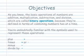As you know, the basic operations of numbers are addition, multiplication, subtraction, and division, which are called binary operations because they're defined in terms of combining numbers two at a time. Of course, the prefix bi means two. And you're undoubtedly familiar with the symbols used to represent these operations: the symbols for plus, times, minus, and divide by.